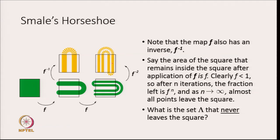If the area of the square remaining inside the square after application of f is some fraction f less than 1, then after n iterations the fraction remaining is f to the n, and as n goes to infinity all points essentially leave the square. We can then ask: are there points that never leave the square? We call that set lambda.